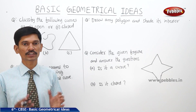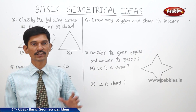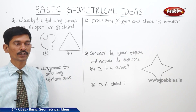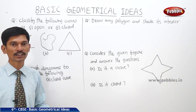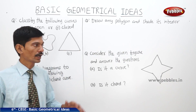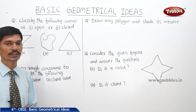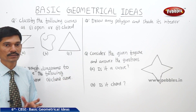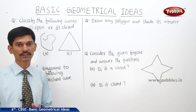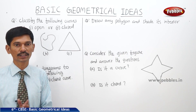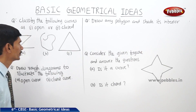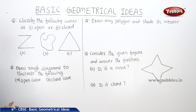So far we have discussed what is a curve, what is a simple curve, what is a closed curve and the open curve. We have also discussed the interior, exterior and boundary of a curve, and also the polygon and the vertices, sides of the polygon, the adjacent sides, adjacent vertices of the polygon, and also the diagonal of a polygon. Now let us do a few problems.